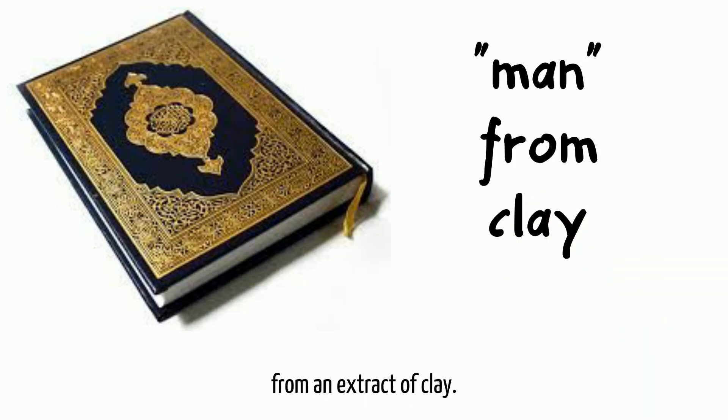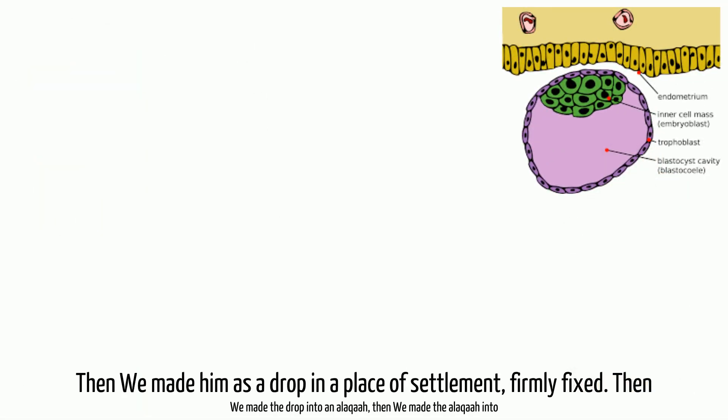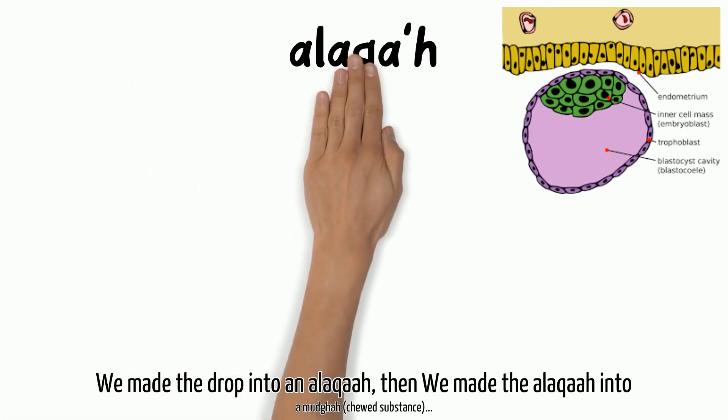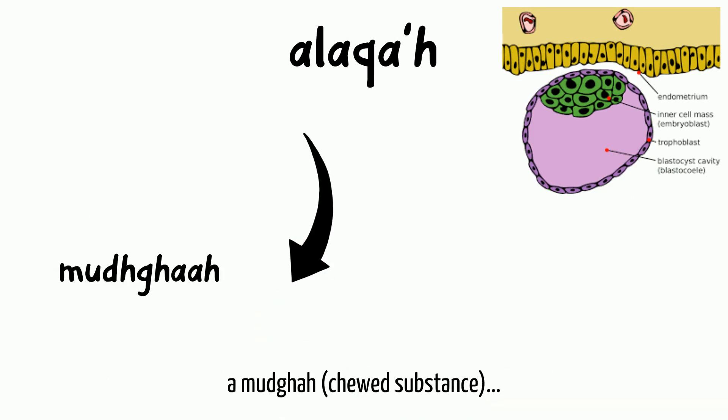We created man from an extract of clay. Then we made him as a drop in a place of settlement, firmly fixed. Then we made the drop into an alakha. Then we made the alakha into a mudgha, chewed substance. Quran 23:12 to 14.